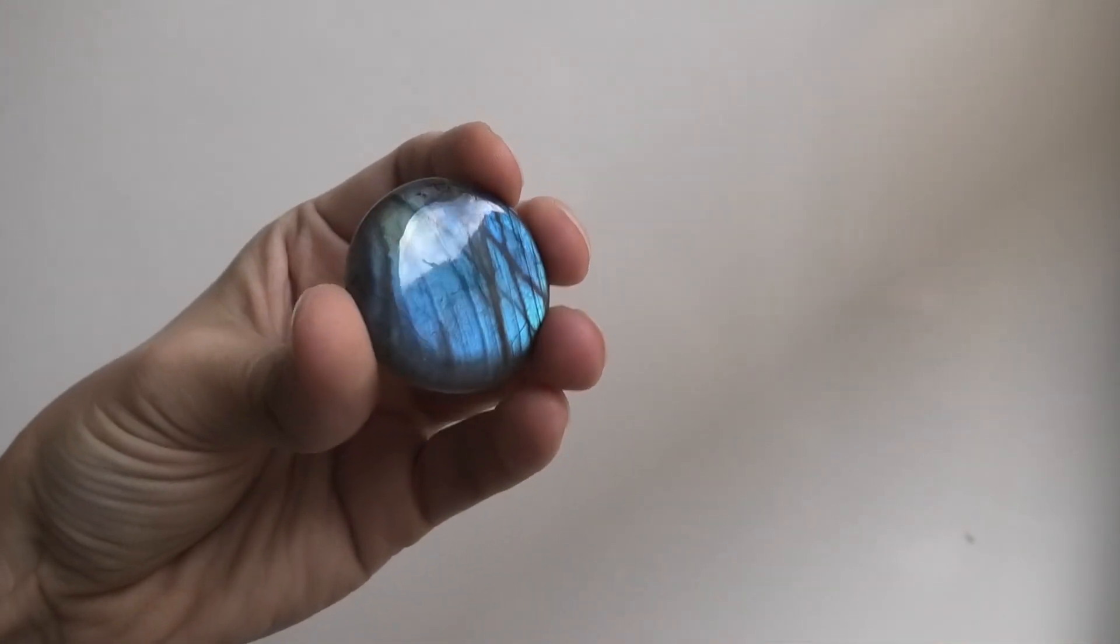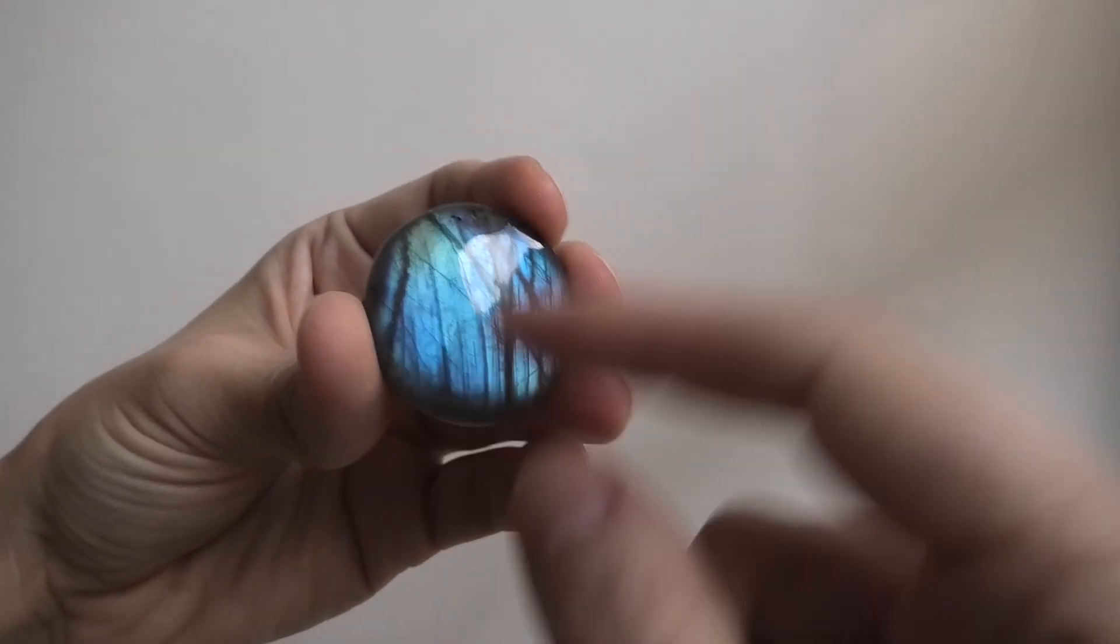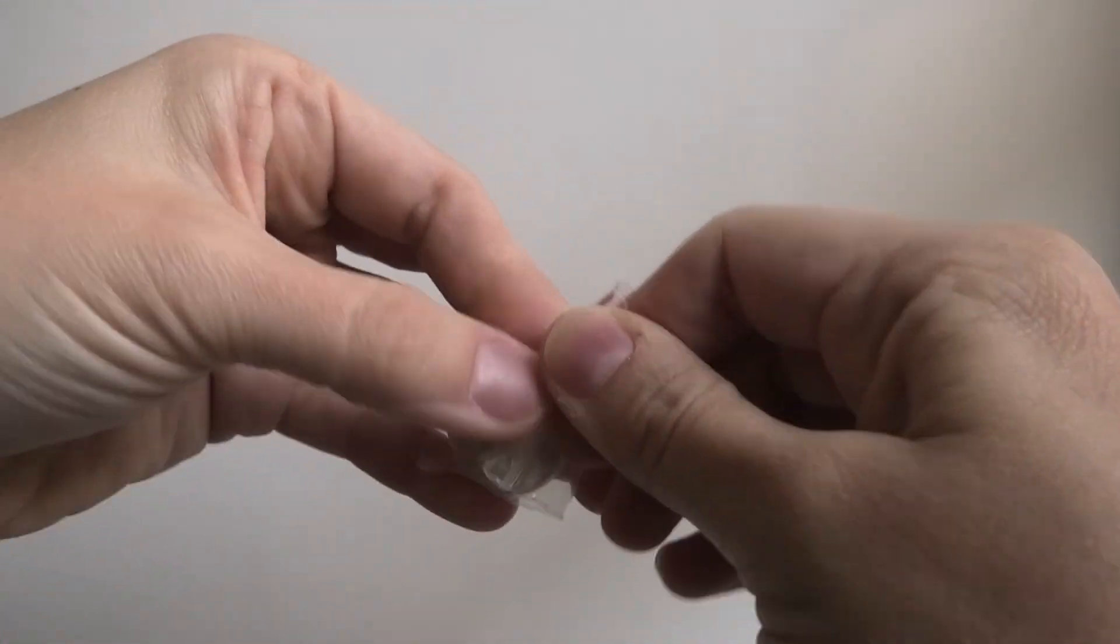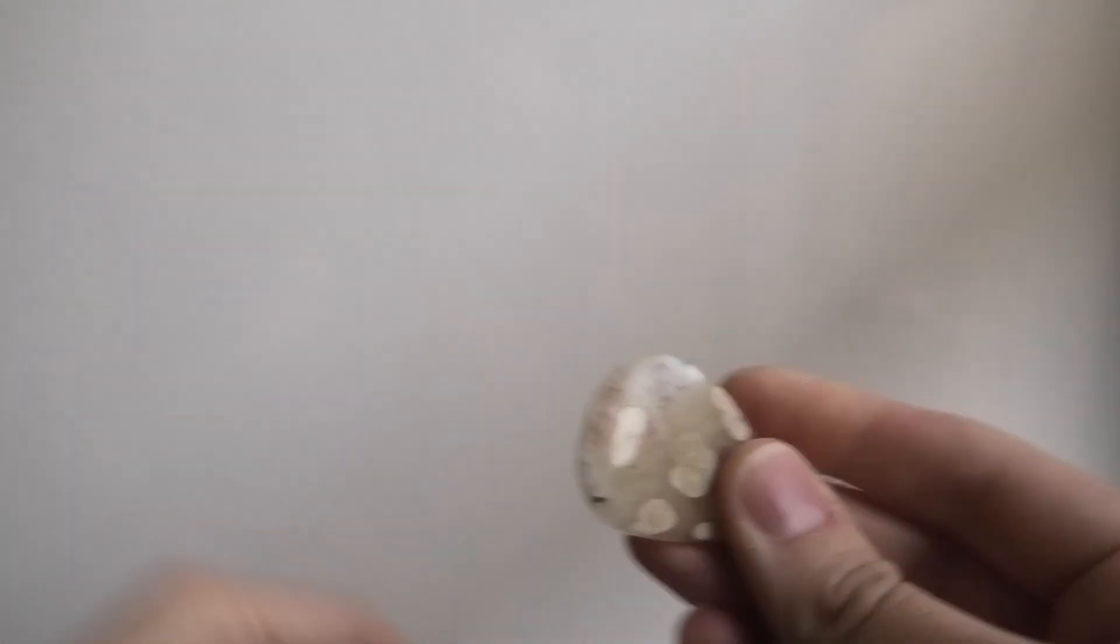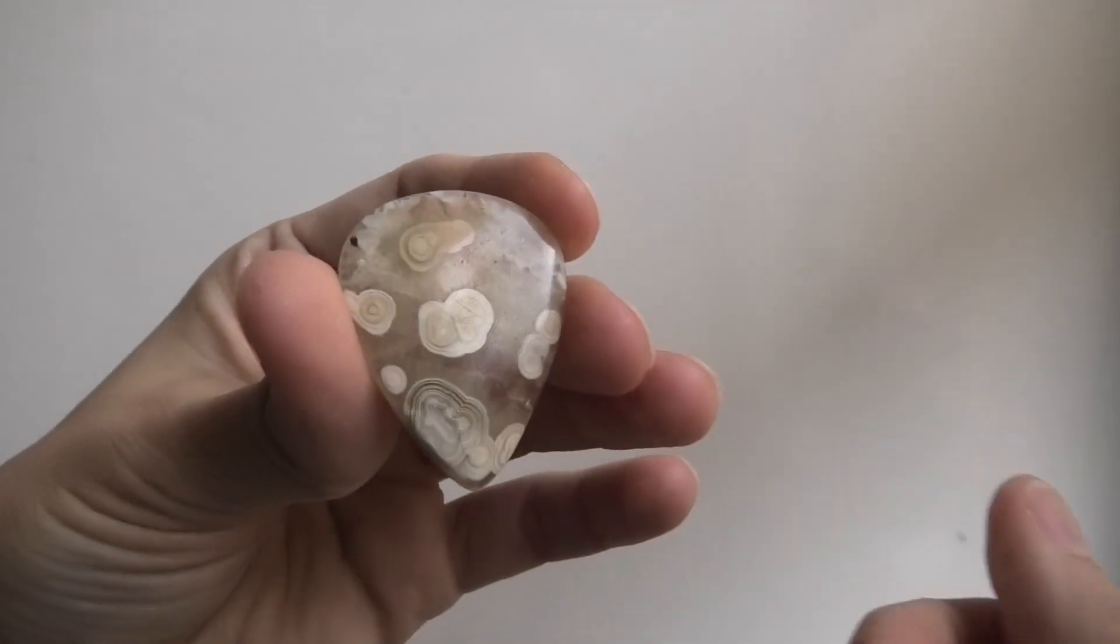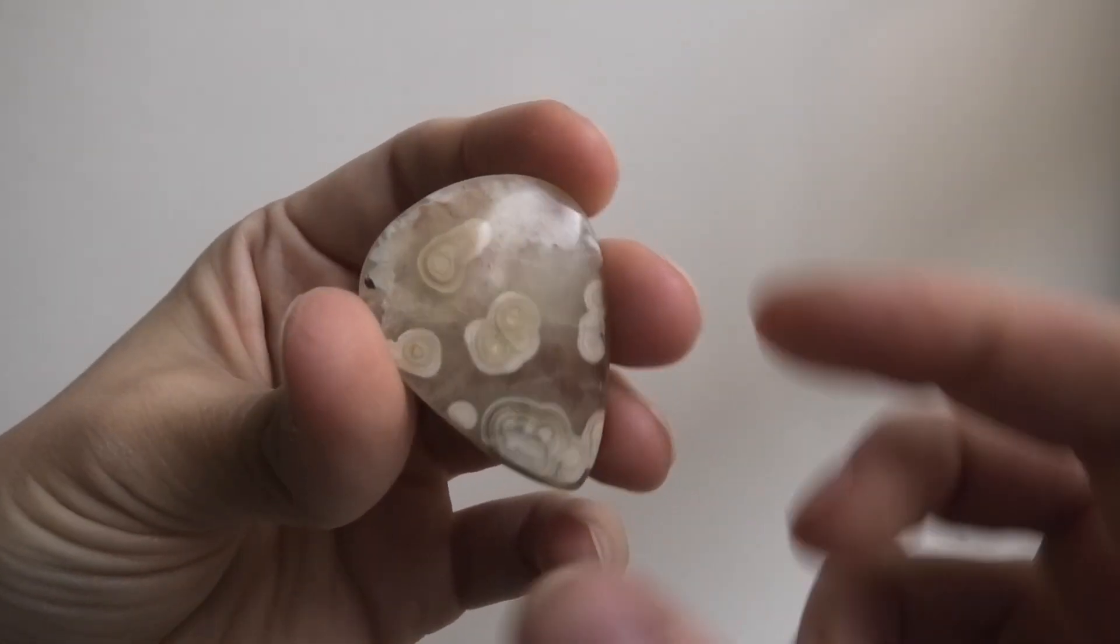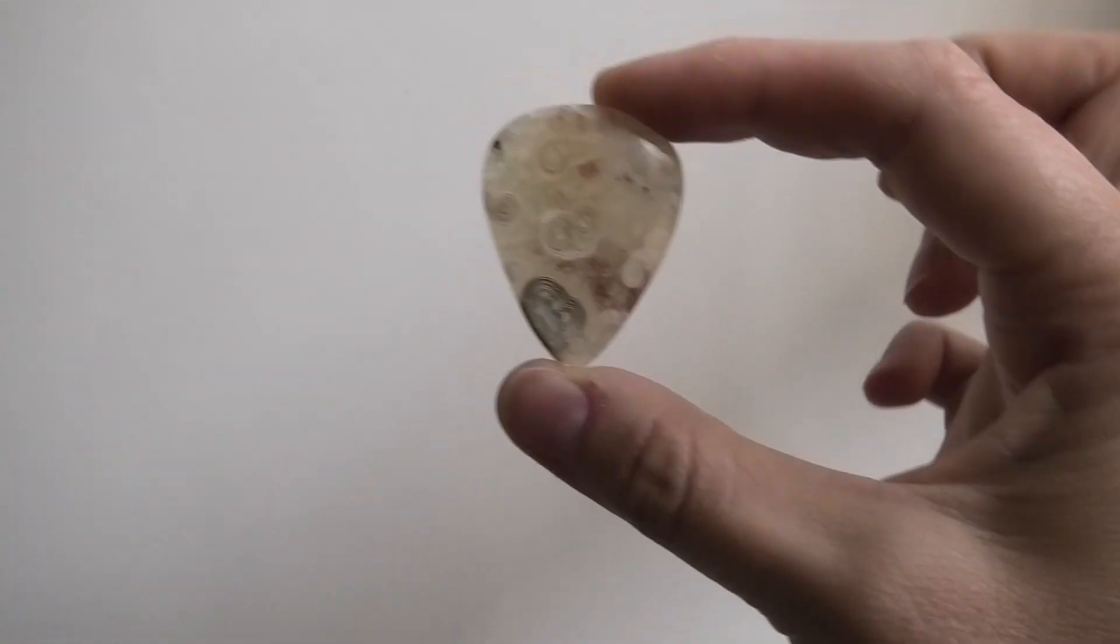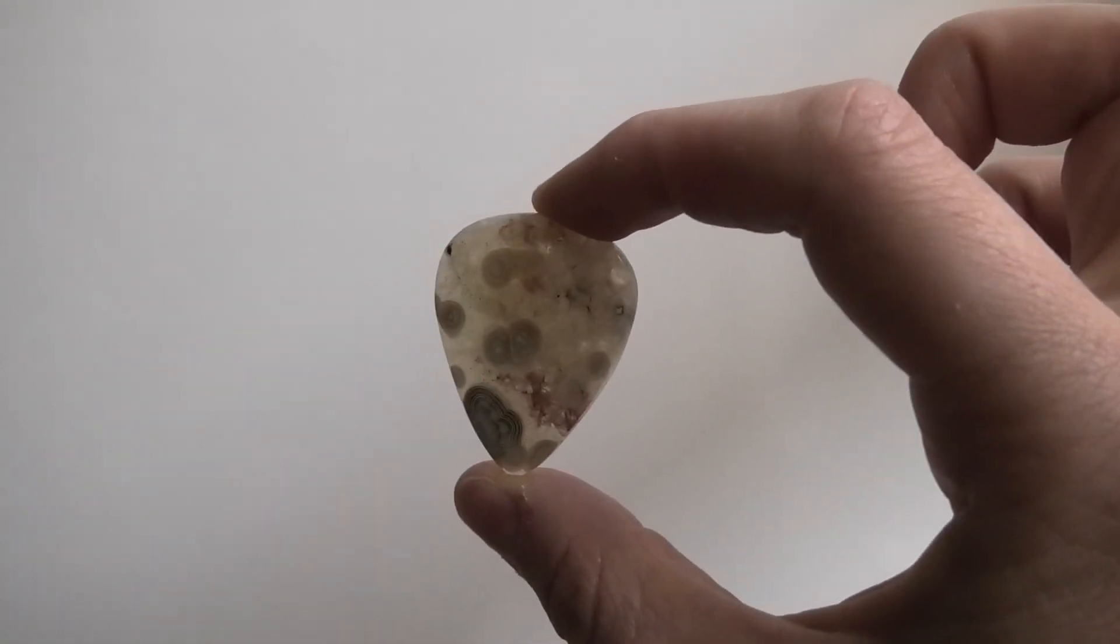And last but not least, we have, what is this one? Oh, it looks like another crazy lace agate. A really cool pattern, and look, it's like translucent when you hold it to the light. Really cool. All right, so I have decided already while I was looking at all of these which two I'm going to make the pendant with for my next video.